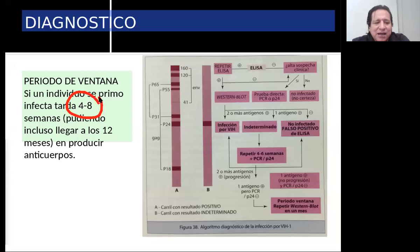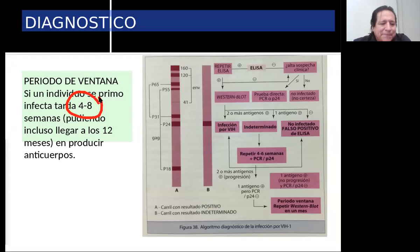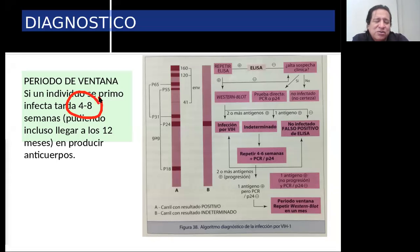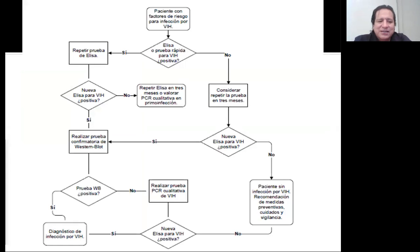Si durante esos 12 meses el paciente se cuidó, usó preservativo, no tuvo relaciones sexuales ocasionales, etc., y a los 12 meses da negativo, podemos estar seguros de que no se contagió. Eso es importante entenderlo, porque puede que se hagan una prueba, vayan al laboratorio, les dé negativo habiéndola hecho a la semana del contacto — es obvio que da negativo — y se queden tranquilos creyendo que no se contagiaron. Sin embargo, pudiera que sí, y en los siguientes meses les va a aparecer la prueba positiva.